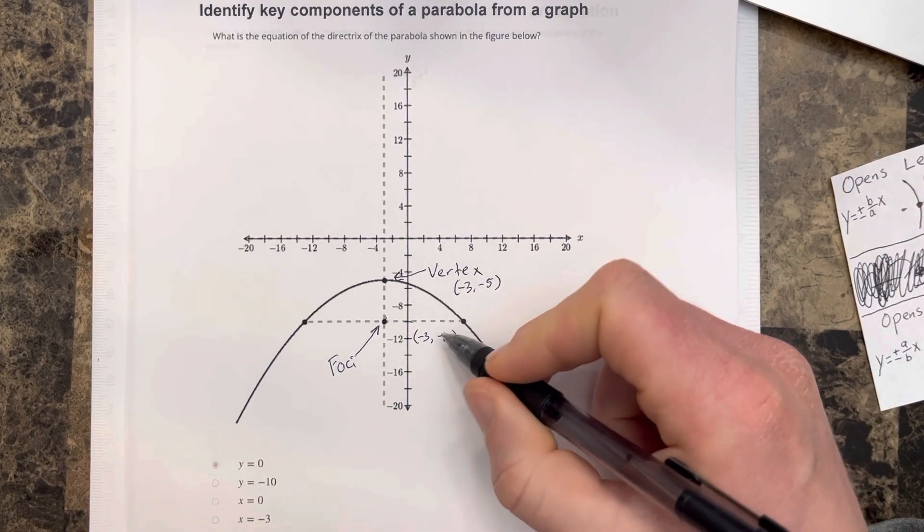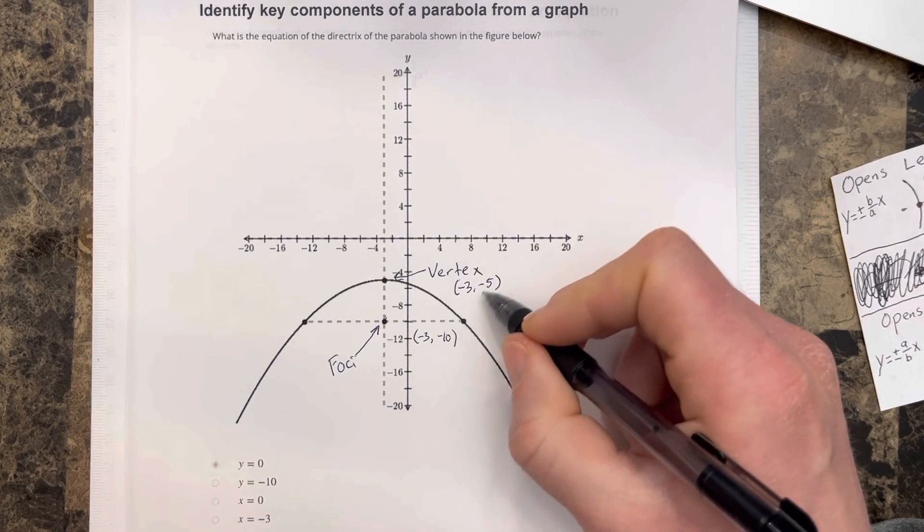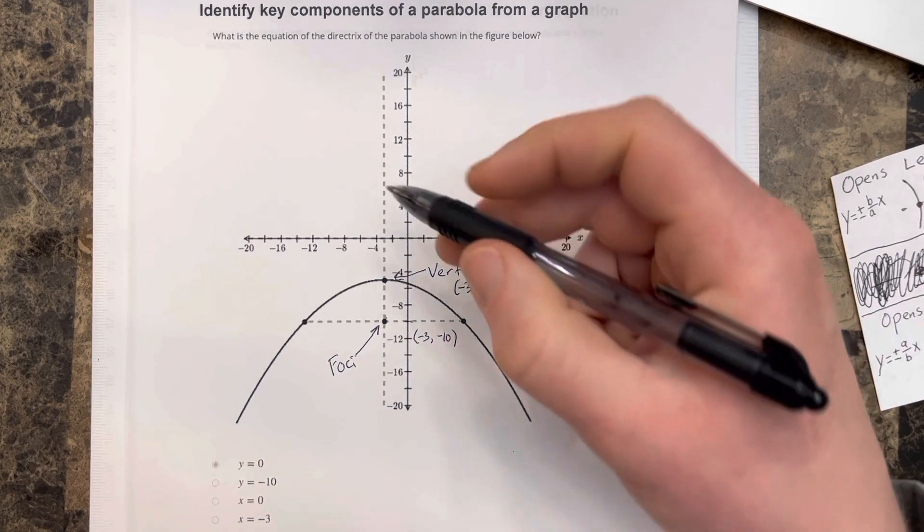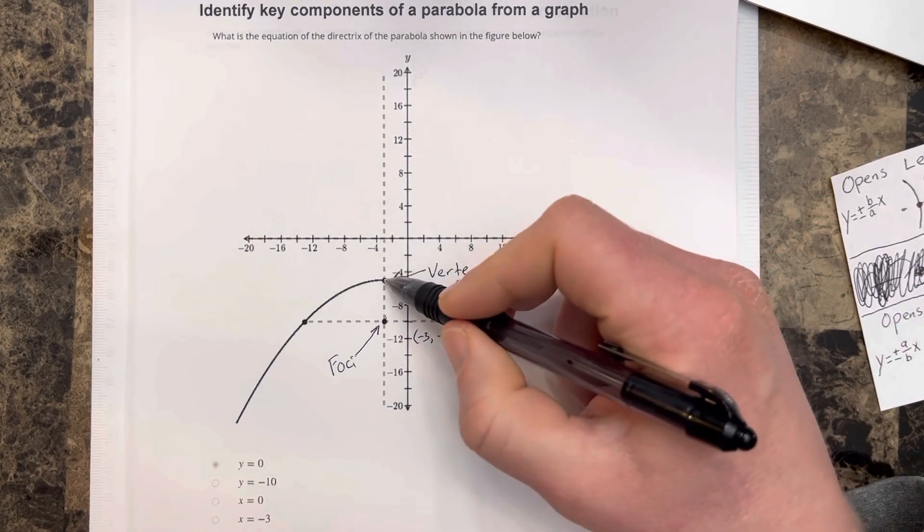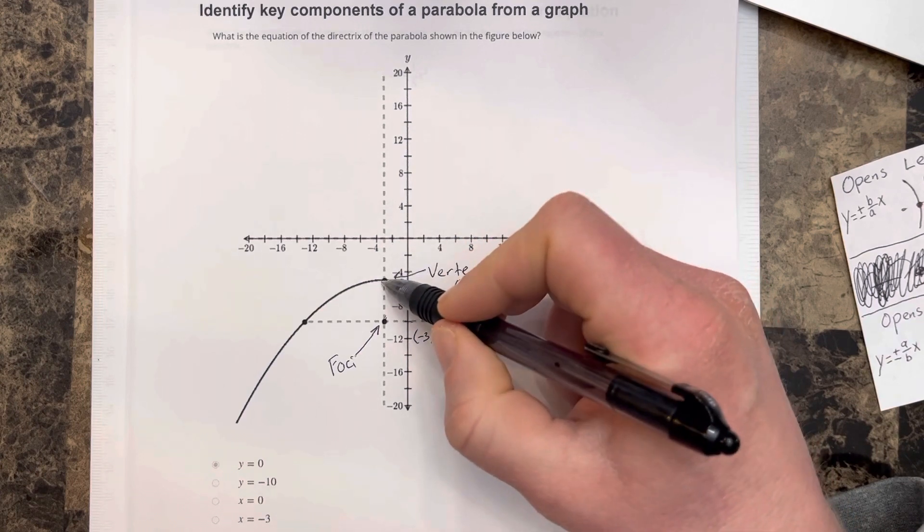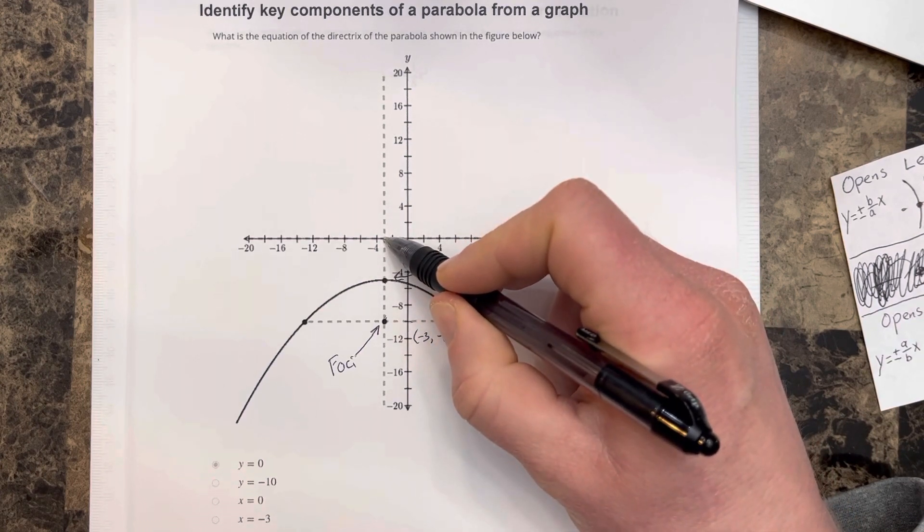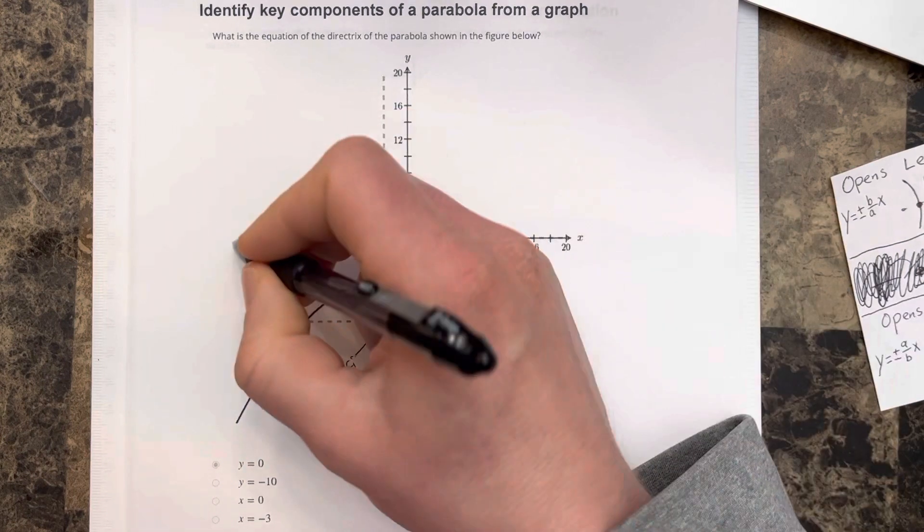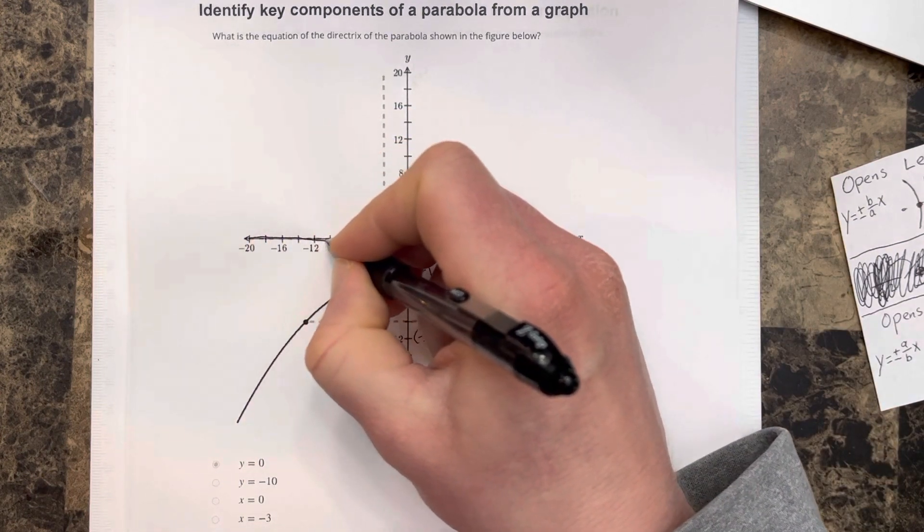The distance between the foci and the vertex is 5, from negative 10 to negative 5. The distance between the vertex and the directrix should also be 5. If I go up 5 from the vertex, that puts me right at the x-axis. So the x-axis is the directrix.